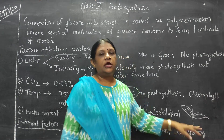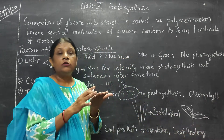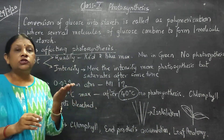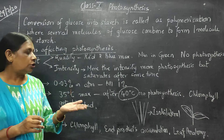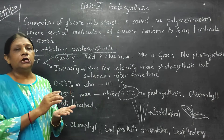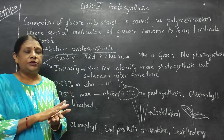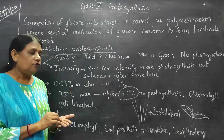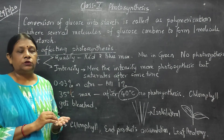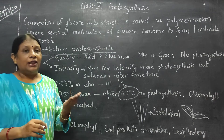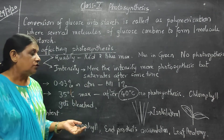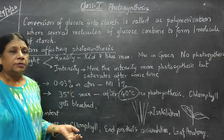All this comes under leaf anatomy — the structure of the leaf. The more broader the lamina, the more the surface area and the more the photosynthesis. The lesser the area, the less the photosynthesis.